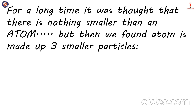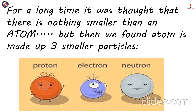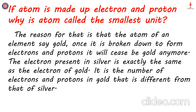But then many years later we found that an atom is also made up of smaller particles. These particles were called proton, electron and neutron. Before we go further to learn about these particles, there is a question: if an atom is made up of electrons and protons, why is an atom called the smallest unit? Why do we still say it is the smallest unit that makes up an element, and not say that it is electron, proton and neutron which makes up an element?